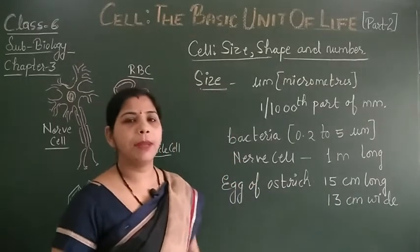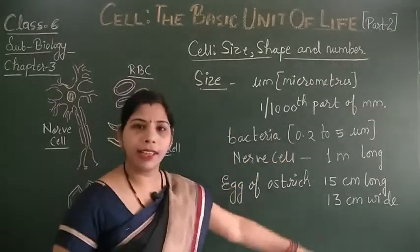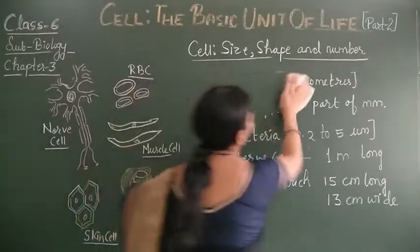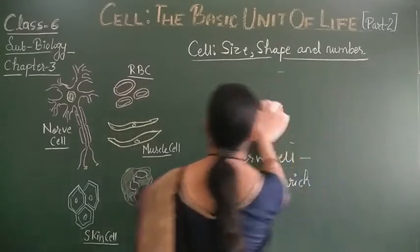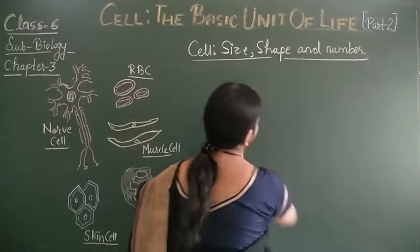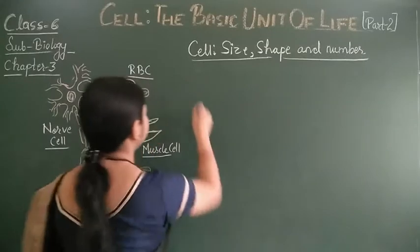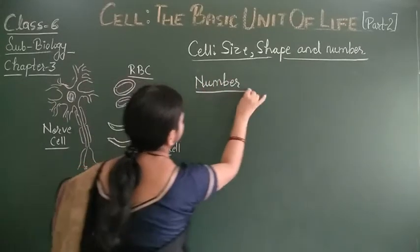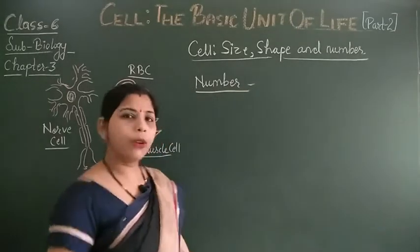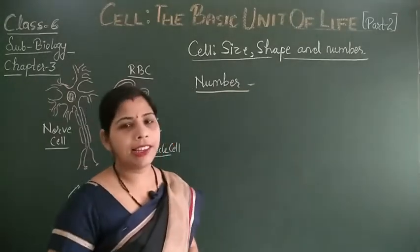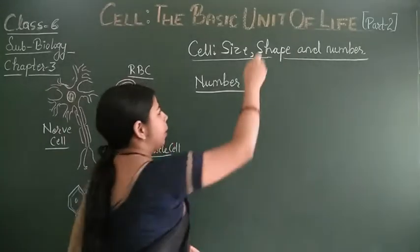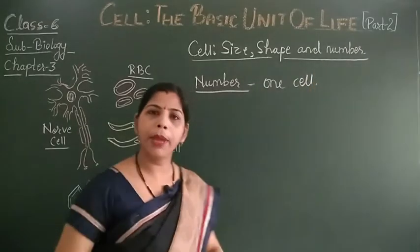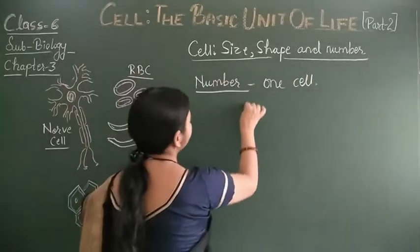That means the size of cells ranges from micrometers to centimeters and meters. Now, let's start the next topic — the number of cells. Cells may be made up of only one cell or may be made up of more than one cell.